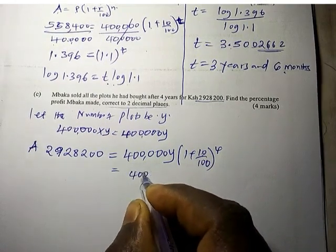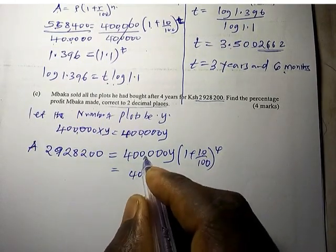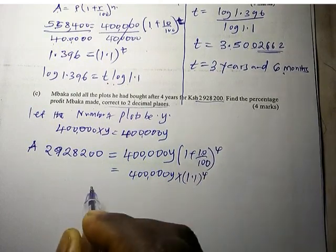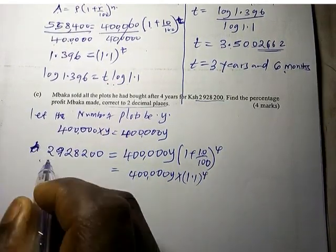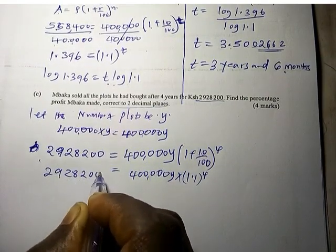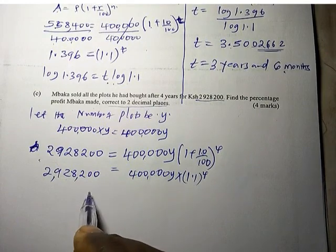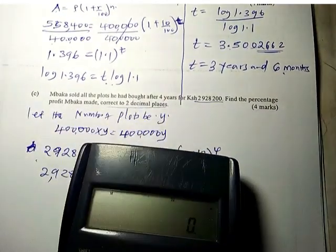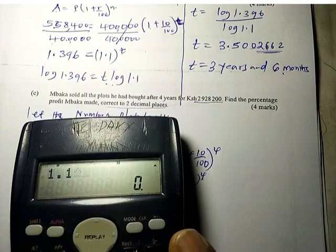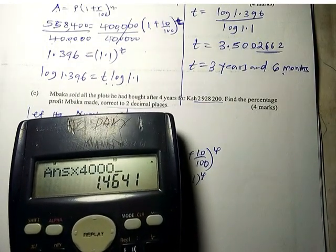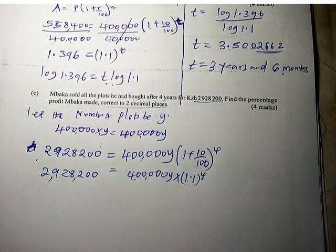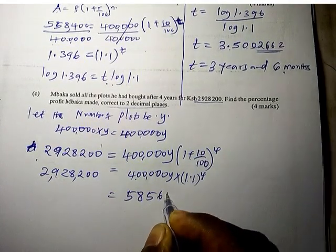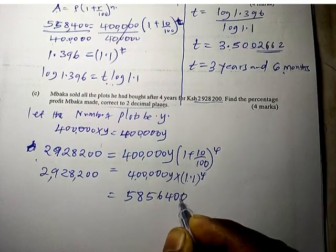So 400,000Y times 1.1 raised to power 4 equals 2,928,200. Now raise 1.1 to power 4. Press 1.1 raised to power 4, get the answer, and multiply times 400,000. So we have 585,640Y equals 2,928,200.